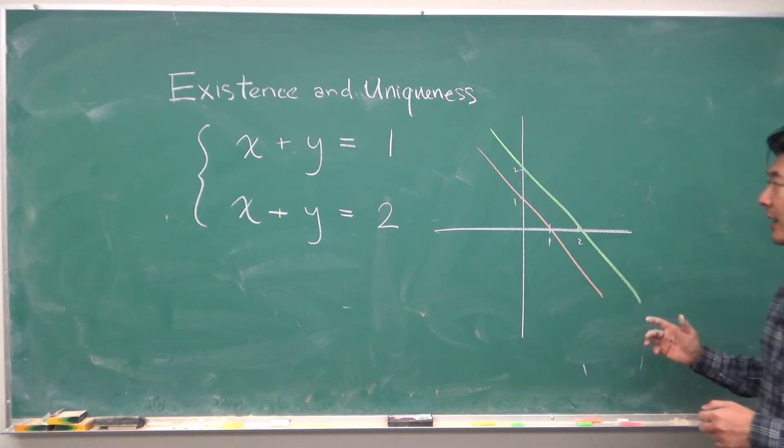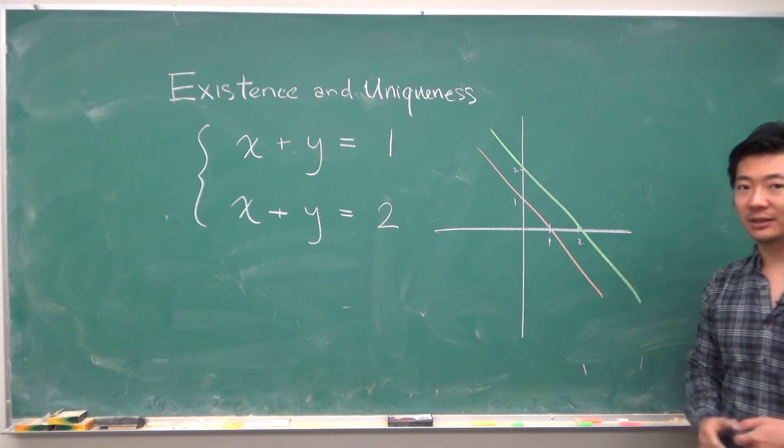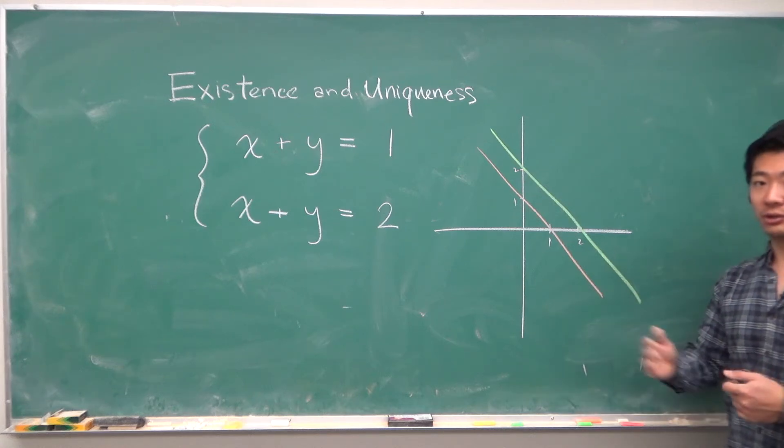And here we see that they are parallel lines and so they will not intersect. And so there are no x and y values that satisfy the equation, both of them simultaneously. So this is a case of no solution.